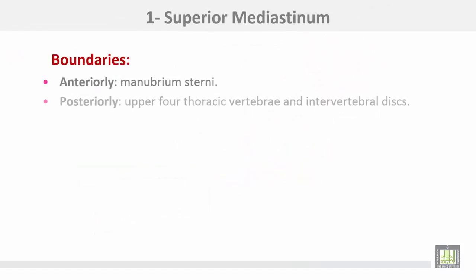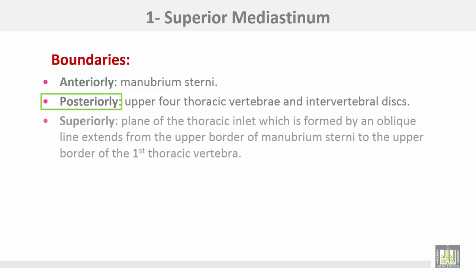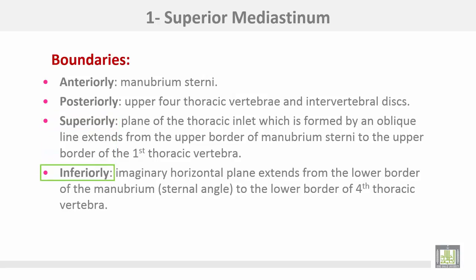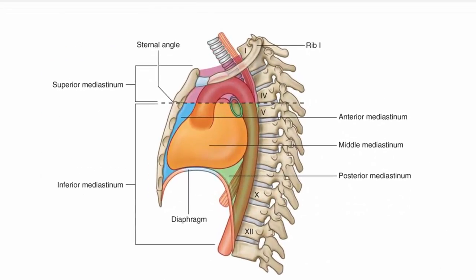The superior mediastinum is bounded anteriorly by the manubrium sternum, posteriorly by the upper four thoracic vertebrae and the intervertebral discs, superiorly by the imaginary plane of the thoracic inlet — which is an oblique line extending from the upper border of the manubrium sternum to the upper border of the first thoracic vertebra. Inferiorly, another imaginary horizontal plane extends from the sternal angle, or lower border of the manubrium, to the lower border of the fourth thoracic vertebra.